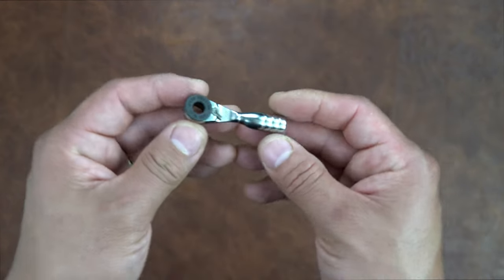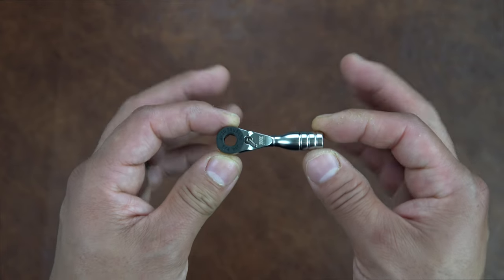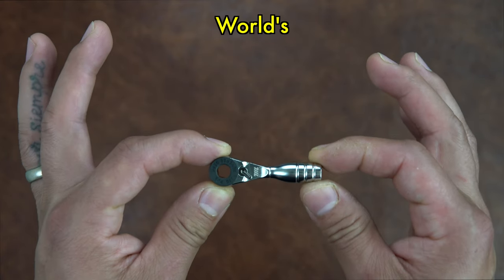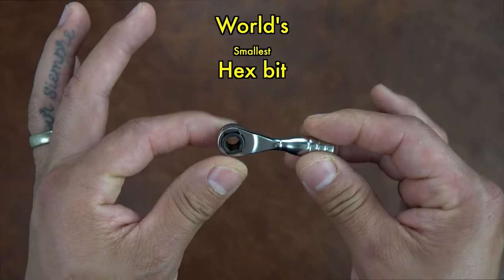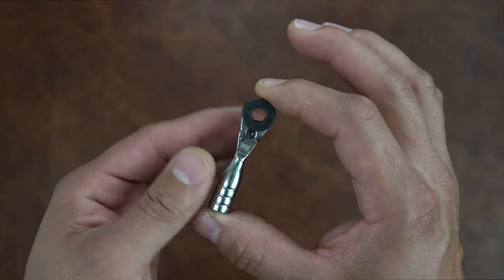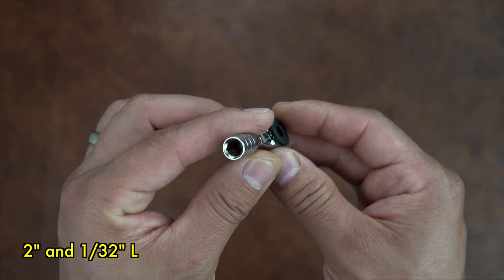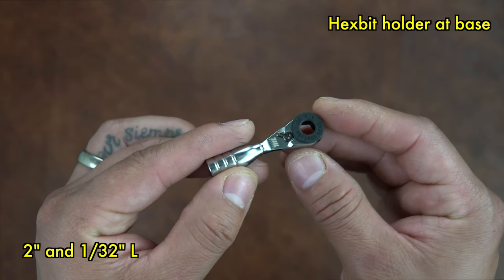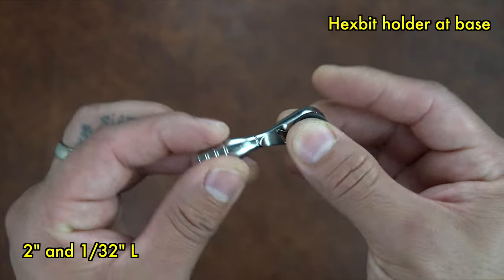Aircraft technicians, would you look at this mini ratchet. This is the world's smallest hex bit ratchet. Look at this, it's a hair over two inches long, has a hex bit holder on the bottom.